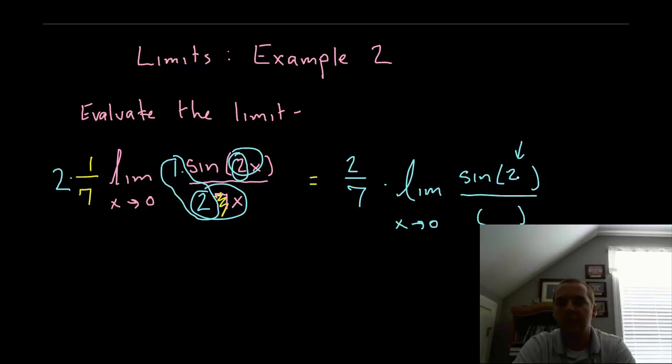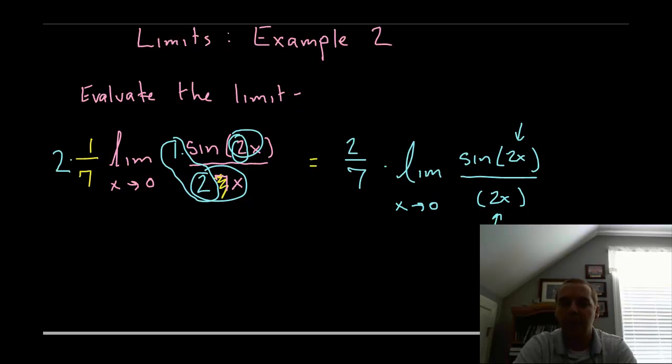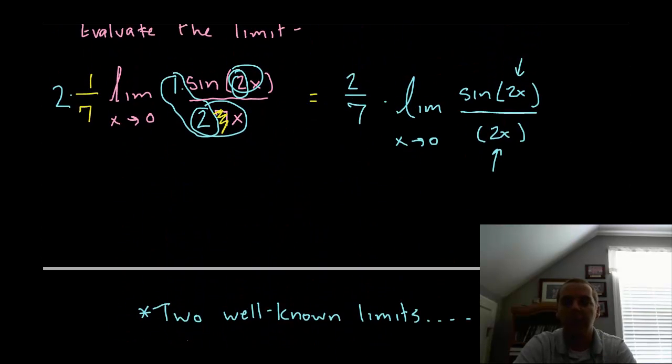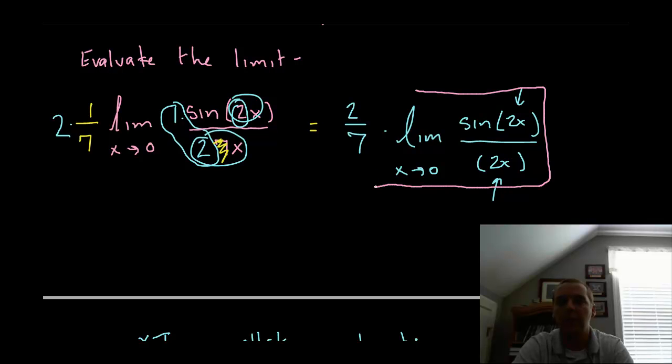So as long as these match, it doesn't have to perfectly fit this template, it's an equivalent format of this template. Just to explain it one other way, you could say sine two x over two x as two x goes to zero, but if two x went to zero, then obviously that means the x would be going to zero as well. So any way you decide to think about it, this limit right here matches that special limit that I showed you previously.